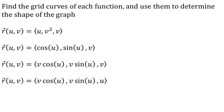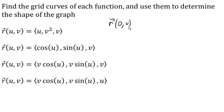Now let's look at the second surface. Again looking at grid curves — if I let u equal a constant, with cosine and sine it makes sense to use convenient values. Cosine of 0 is 1, sine of 0 is 0, and then v. You'll notice this looks like it's describing a line.